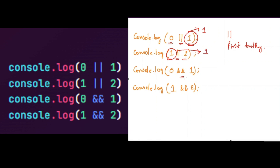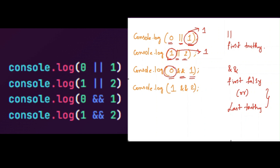Here we are using the AND operator. What does the AND operator do? It will return the first falsy value. Or if we are using it between two truthy values, then it will return the last truthy value. Here we are using the AND operator between a falsy value and a truthy value, so it will return the first falsy value — it will return 0 to the console.